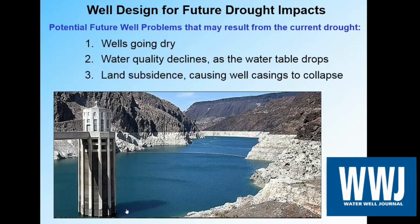The third issue is not so obvious, but it certainly occurs a lot in the western United States and other places in the world, and that's land subsidence. When we dewater a clay layer, the clay particles are actually supported by the water and so they can collapse — and that's a permanent thing — so we get an actual drop in the land surface. Historically in Arizona we've had over 18 feet of land drop in some locations, in California it's been over 30 feet, and there's been subsidence in Texas, Mexico City, and other places as well.